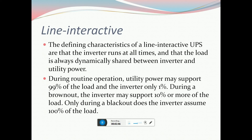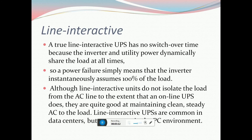A line interactive UPS runs all the time and always dynamically shifts between the interactor and utility power during routine operation. Utility power may support 90% of the load and the inverter only 10% during normal operation, but during a brownout the inverter may support 100% of the load. A true line interactive UPS has no switchover time because it dynamically shifts the load at all times, so power failures simply mean the interactive unit assumes 100% of the load.